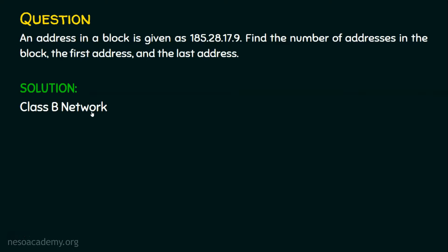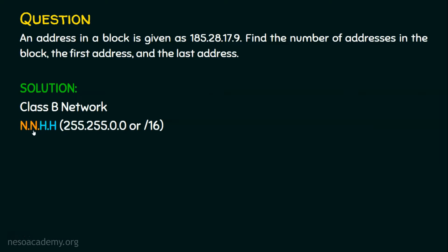In a class B network, the first two octets are the network portion and the last two octets are the host portion. So if an IP address is given, the first two octets are network and the last two octets are for the host. The default subnet mask is 255.255.0.0 — in other words, slash 16. Out of 32 bits in the IP address, we have 16 bits in the network portion and 16 bits in the host portion. So 185.28 is the network portion and 17.9 is the host portion.